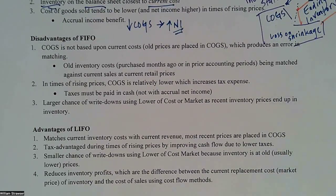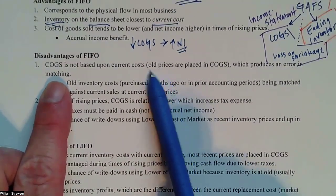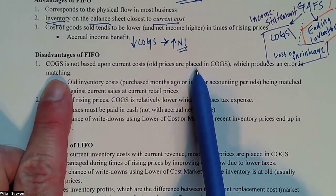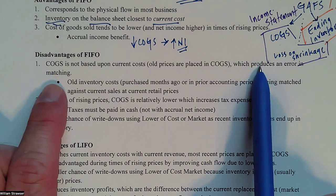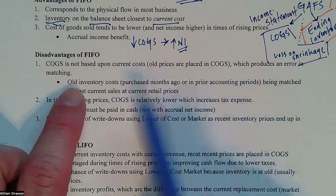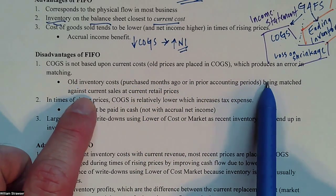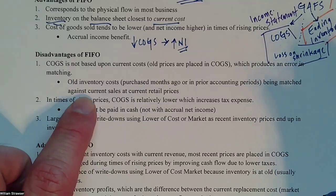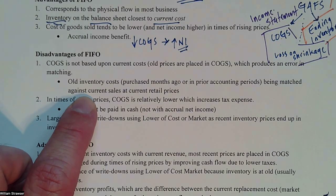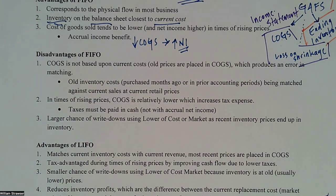The disadvantages of FIFO: the cost of goods sold are not based on current costs. We assume we sold the oldest stuff first, so those old inventory costs are put into COGS. This can create a sort of error in matching — those old inventory costs, maybe from months ago or prior accounting periods, are being matched against current period sales. We're recording sales revenue at current prices but matching old costs against those current period revenues.